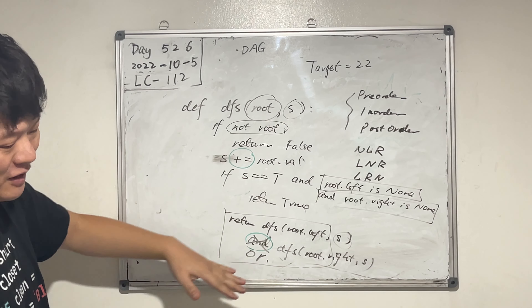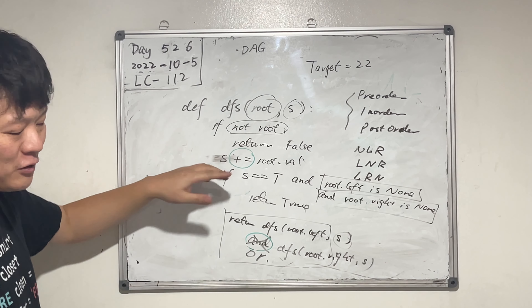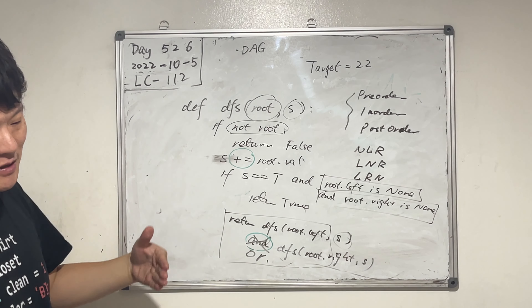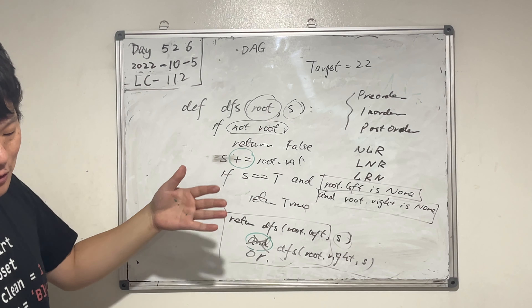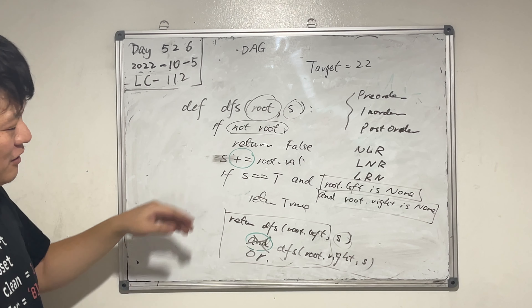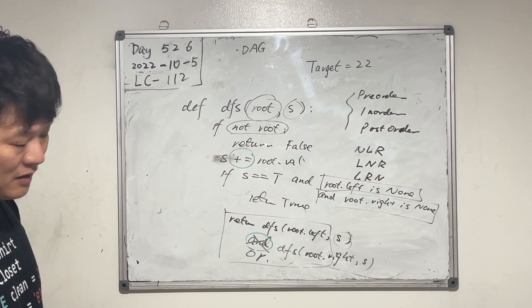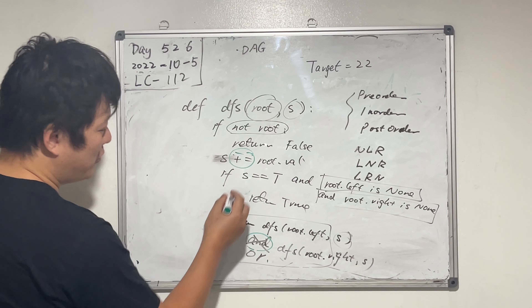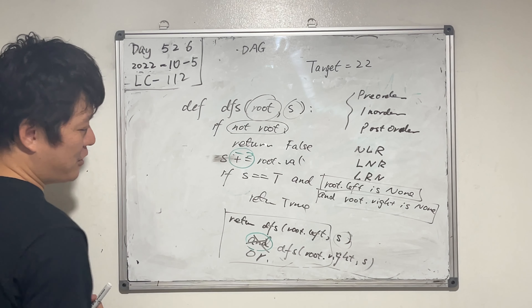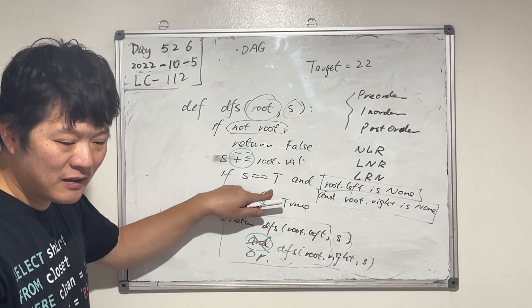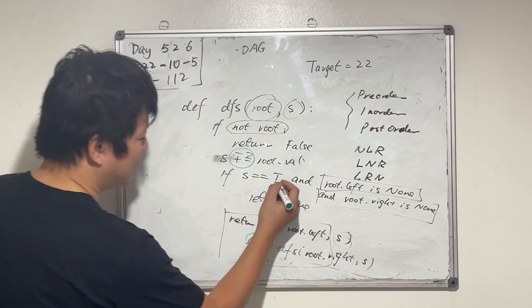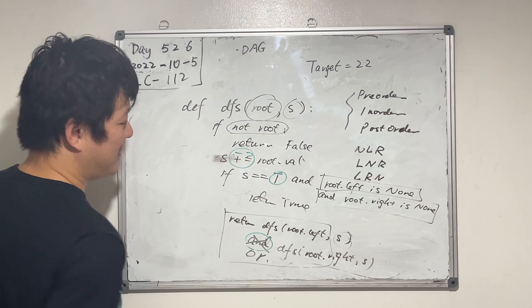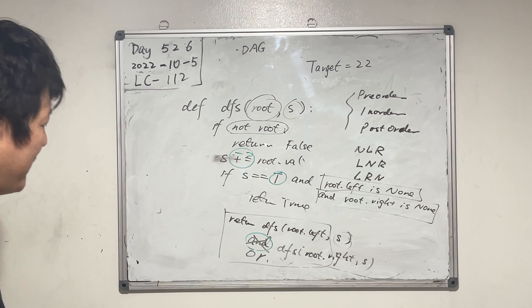If we want to subtract instead, we change plus-equal to minus-equal, and change the target comparison to zero. That's all we need to change.